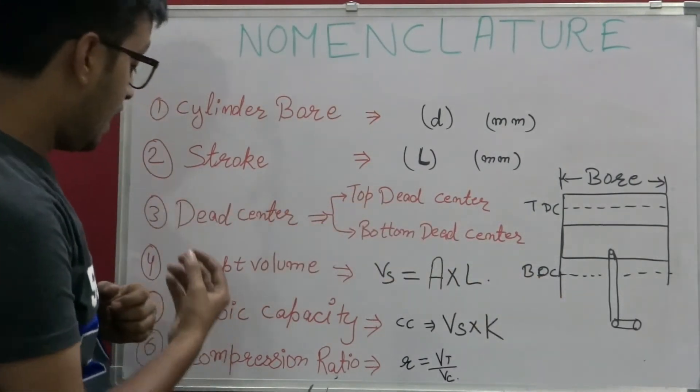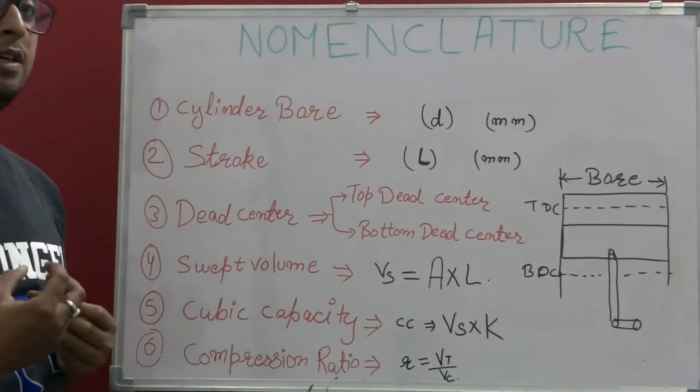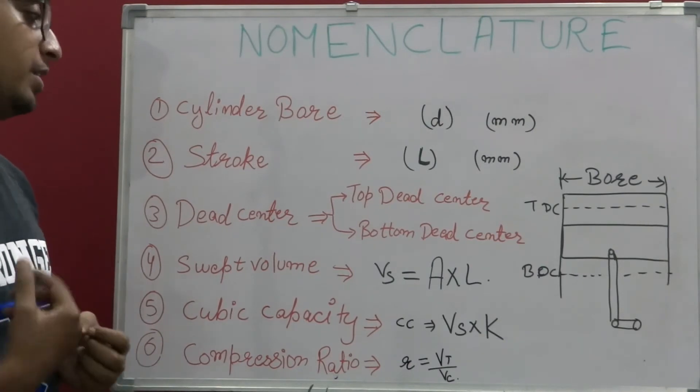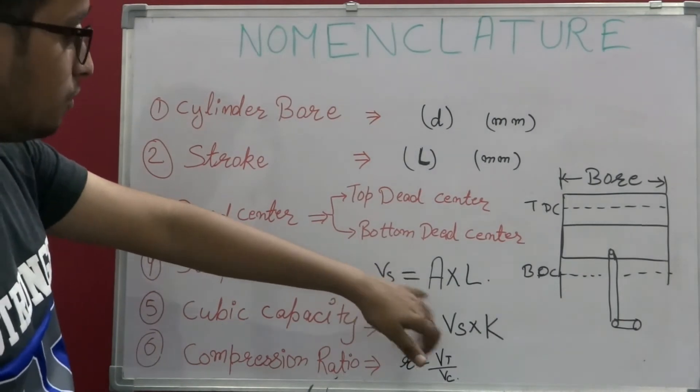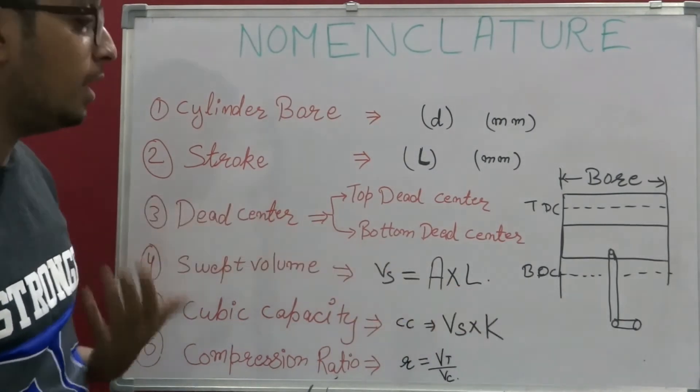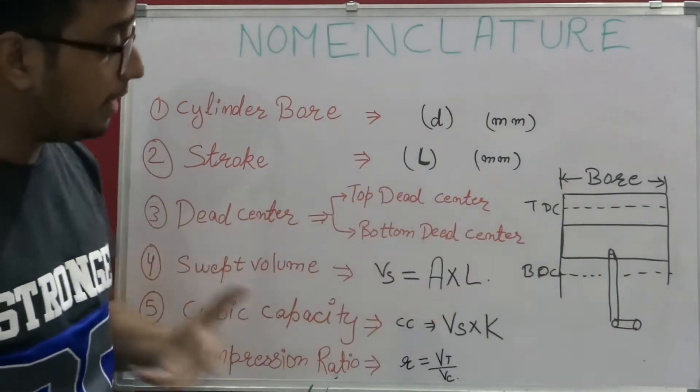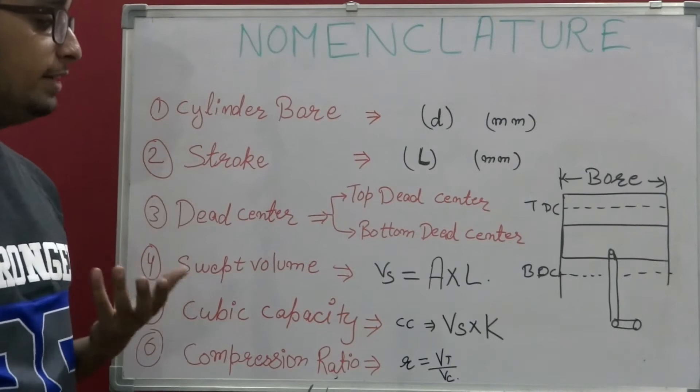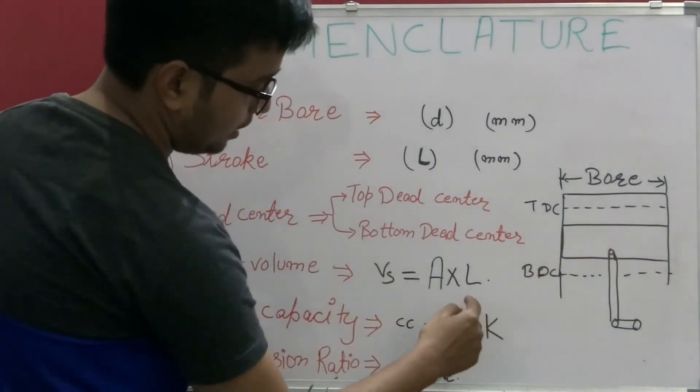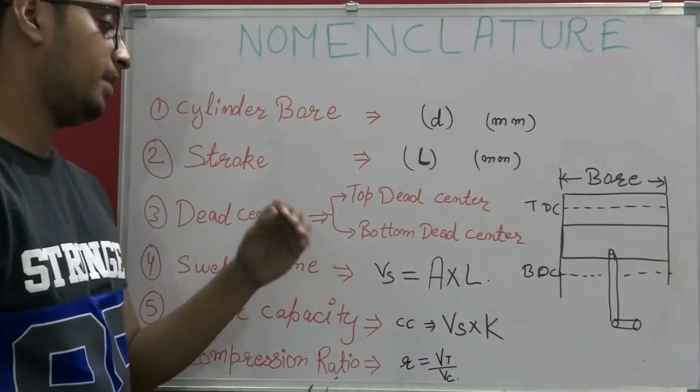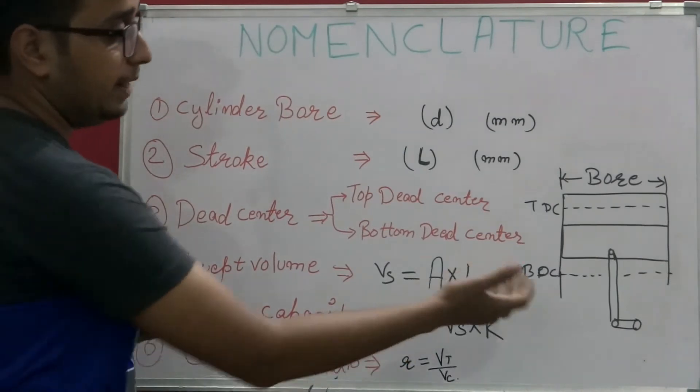After that we have swept volume. Swept volume is basically the amount of air and fuel mixture the piston sweeps while it's working. It is denoted by Vs and its formula is A into L, where the area of this cylinder is π/4 into D squared, where D squared is the diameter of the piston and L is the stroke of the piston from BDC to TDC.